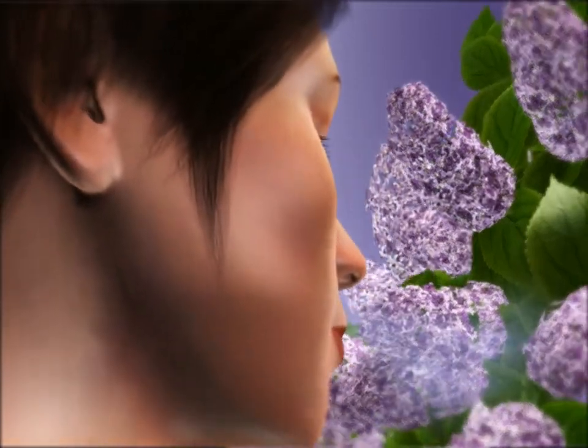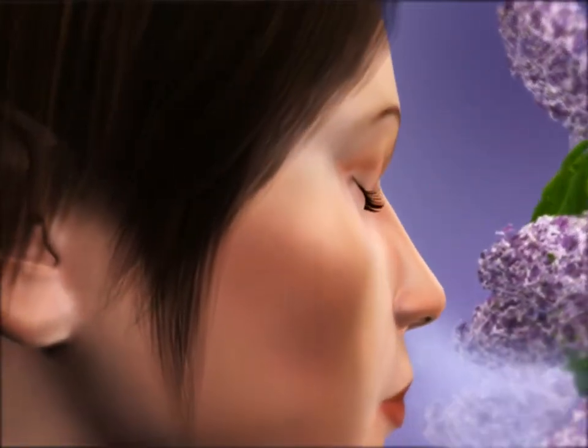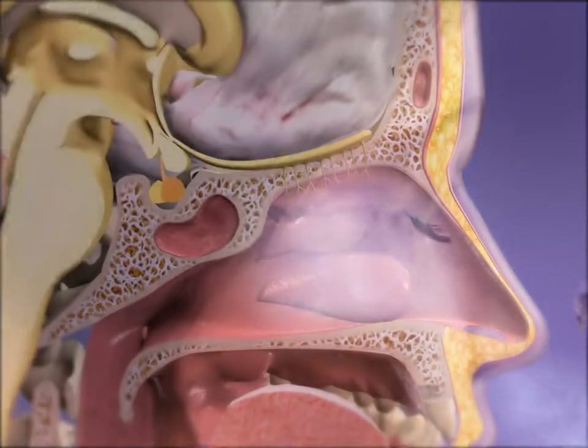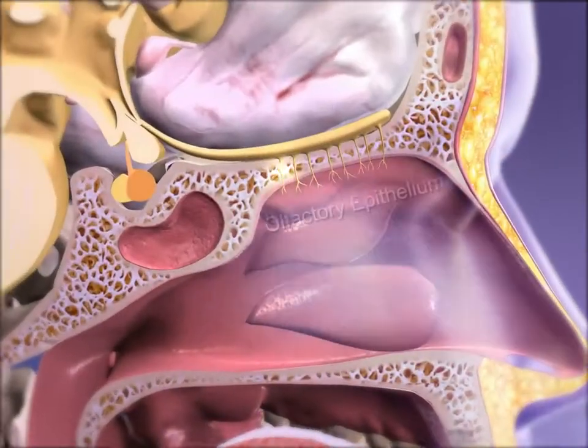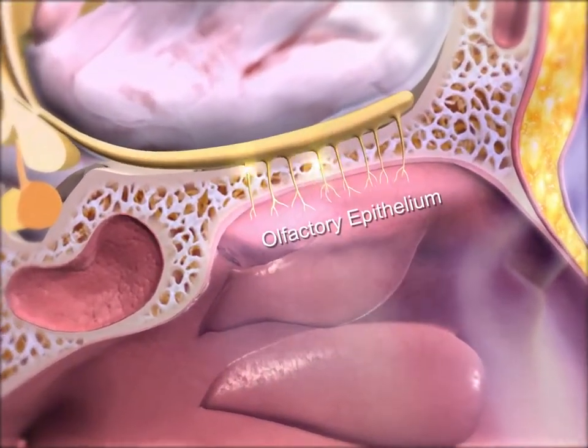The process of olfaction, or smelling, begins with hair-like cilia that line the nasal cavity. This lining is called the olfactory epithelium.